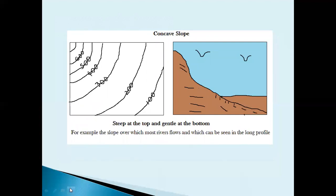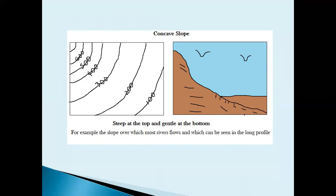The next slope is concave slopes. Concave slopes are steeper at the top than at the bottom. On the contour map, areas with greater values — indicating the top of the slope — have closely spaced contour lines, while areas with smaller values — indicating the bottom — have widely spaced contour lines. This type of slope is common along river courses and is shaped largely by the flow of the river.